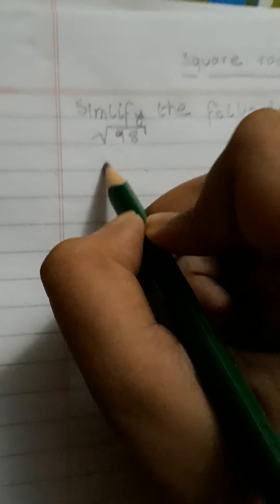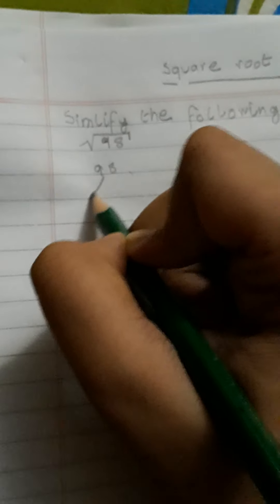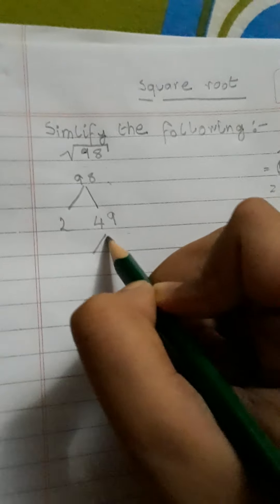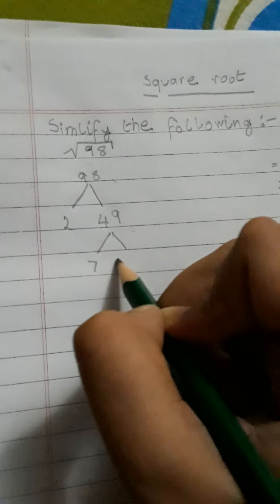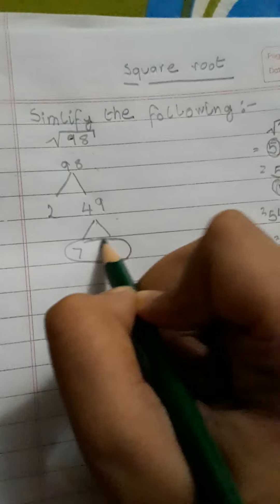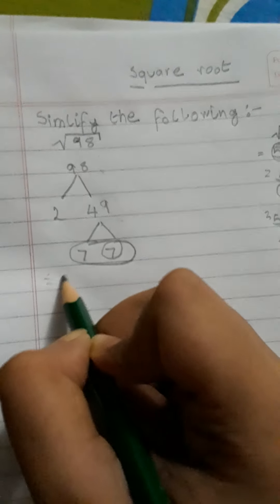Now here we know that 98 factorizes to 49. Now take care that 49 is again divided: 7 into 7. So we will now focus on that.